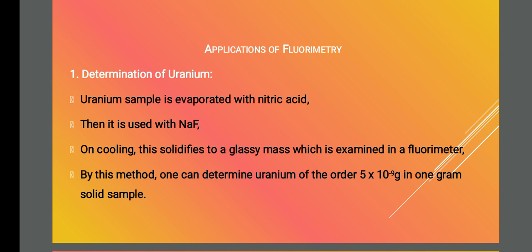To summarize: take the uranium sample, treat with nitric acid and evaporate, then fuse with sodium fluoride, then cool the sample. It solidifies to a glassy mass which is examined under a fluorometer. By this method we can determine uranium of the order of 5×10⁻⁹ gram in 1 gram of the sample.